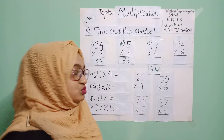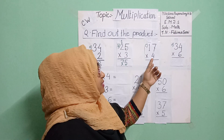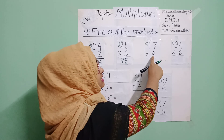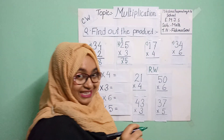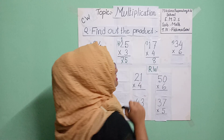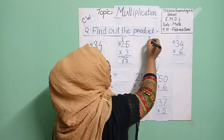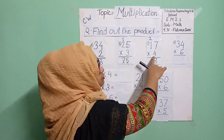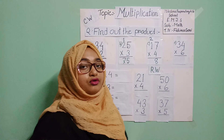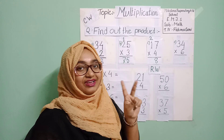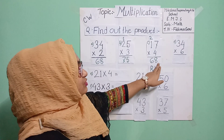Now we are going to problem C. The multiplicand is 17 and the multiplier is four. We will use the four times table. Four sevens are twenty-eight, so I write eight here and carry two to the tens place. Then four ones are four, plus the extra two gives us six. So the product is sixty-eight.